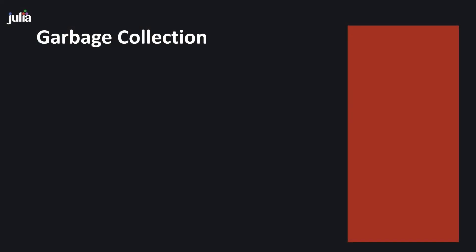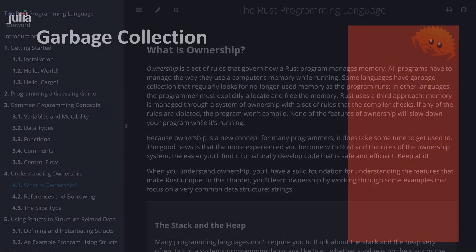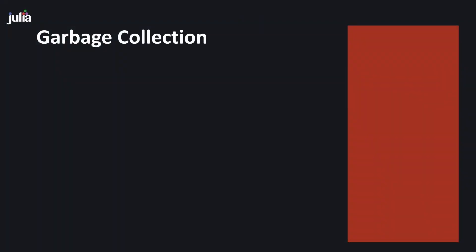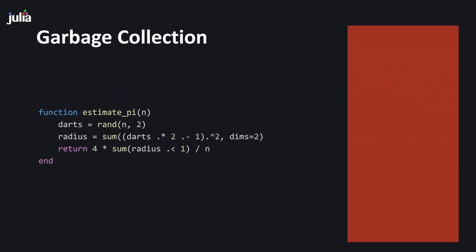Garbage collection is one of the most dominant strategies for managing memory in modern programming languages. If you've written code in a language that didn't require you to manually free memory, it's very likely you were using a garbage collector — unless you were writing in a language like Rust, which has its own special system for dealing with memory. Let's look at an example: a function that estimates pi using a Monte Carlo method. We'll focus on how memory is used throughout the execution of this function.